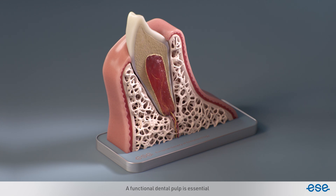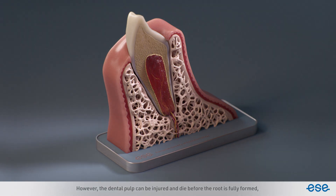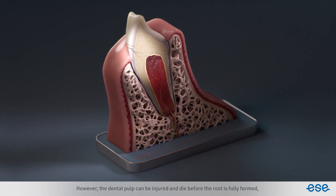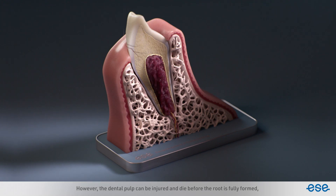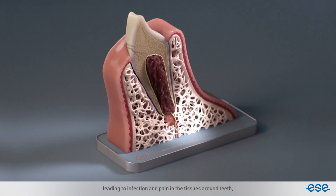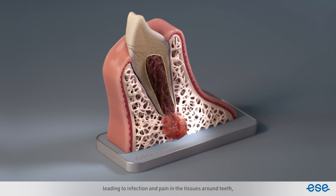A functional dental pulp is essential for normal root development. However, the dental pulp can be injured and die before the root is fully formed, leading to infection and pain in the tissues around the teeth, particularly the jawbone.